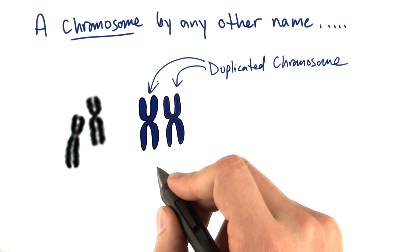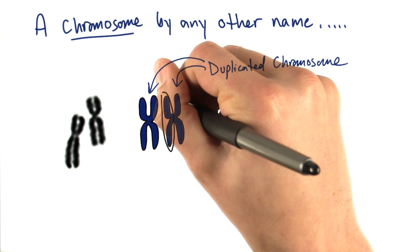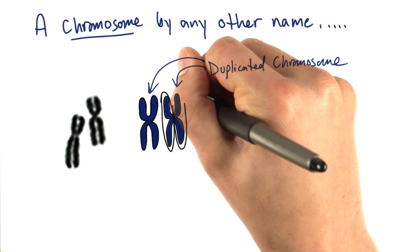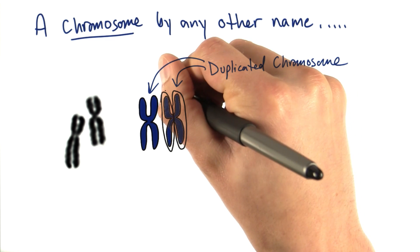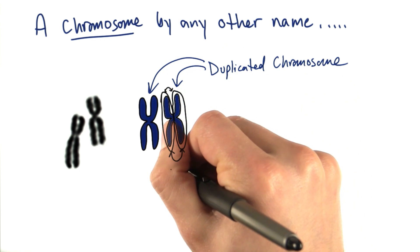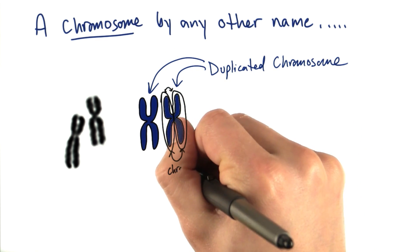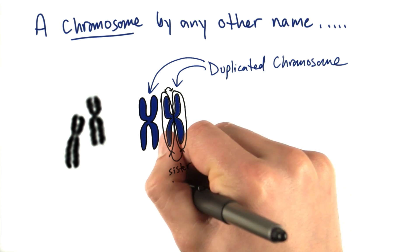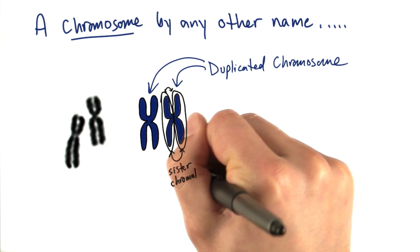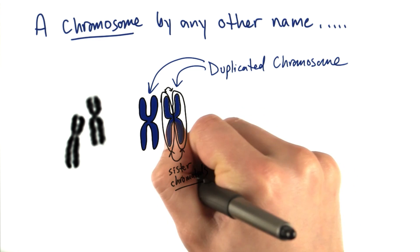It's called a duplicated chromosome because each side of the X is actually identical to the other side. And we refer to each of these sides as chromatids. In fact, because they're so identical, we refer to them as sister chromatids.